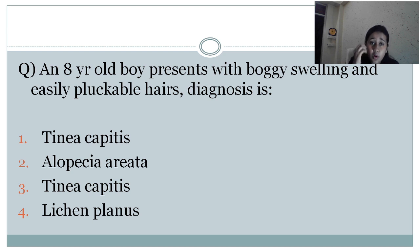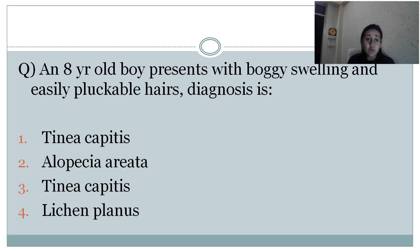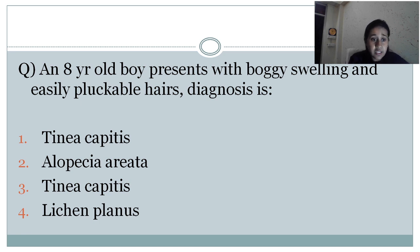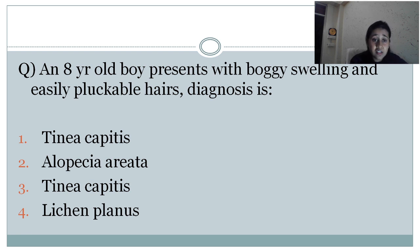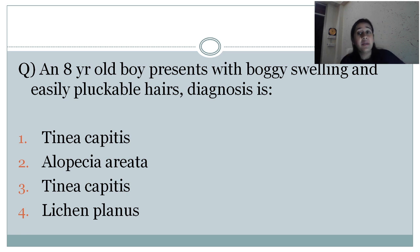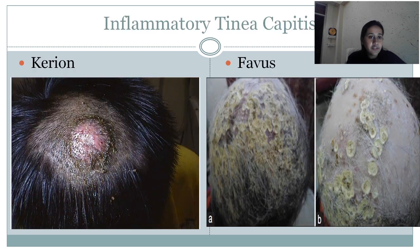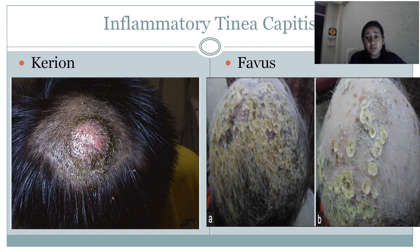Question: an eight-year-old boy presents with boggy swelling and easily pluckable hair — what is the diagnosis? Options are tinea capitis, alopecia areata, tinea capitis (repeated), or lichen planus. The answer is tinea capitis — this is an example of inflammatory tinea capitis (kerion). The presence of boggy swelling over the scalp with easily pluckable hair is a classical presentation of kerion. This is not lichen planus.